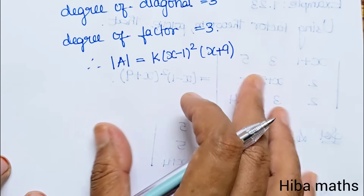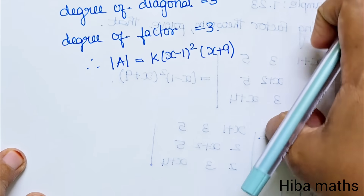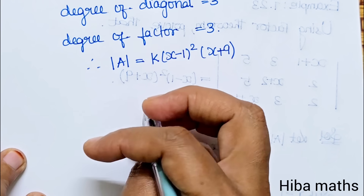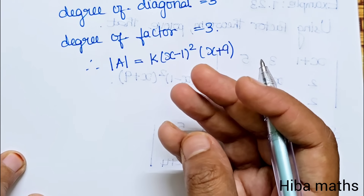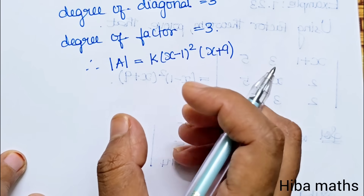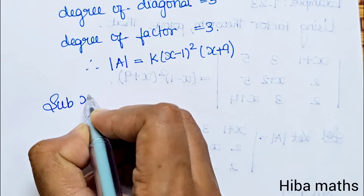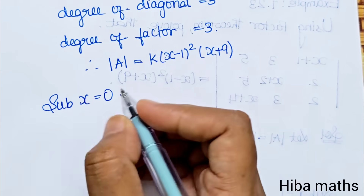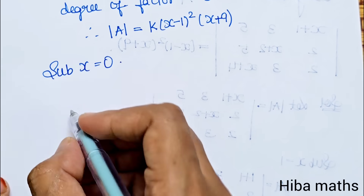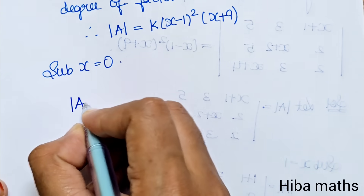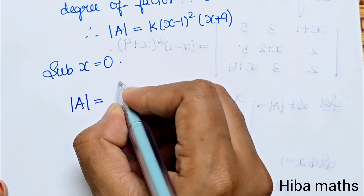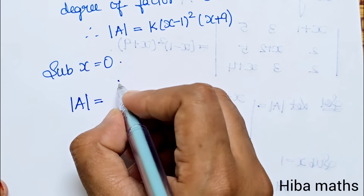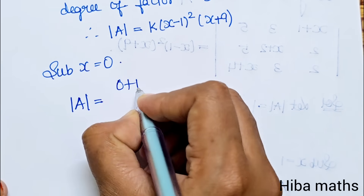Now we need to find the value of k. To find k, substitute x equal to 0.